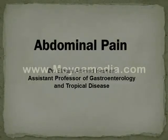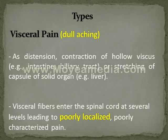Our talk about abdominal pain. Types of abdominal pain: first is visceral pain — it is dull, aching, and poorly localized. Pain is due to the extension or contraction of hollow viscus like intestine and biliary tract, or stretching of the capsule of a solid organ like the liver.